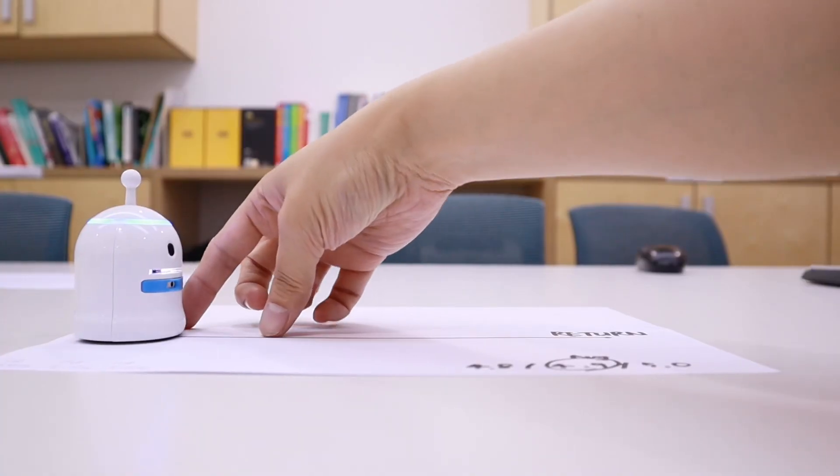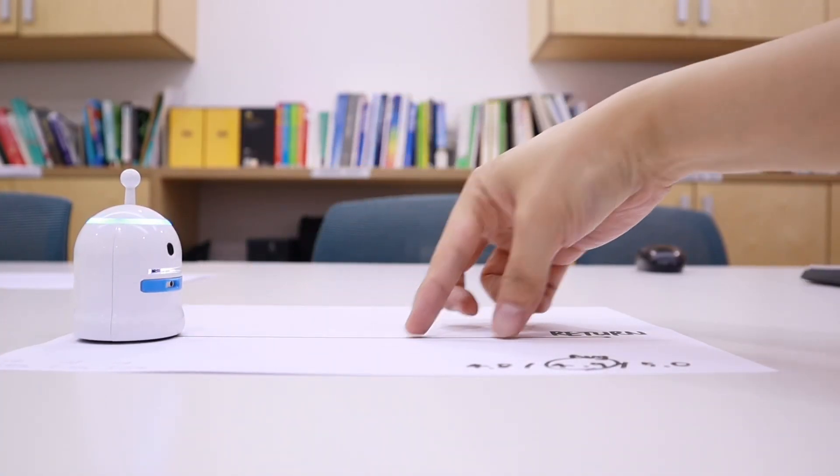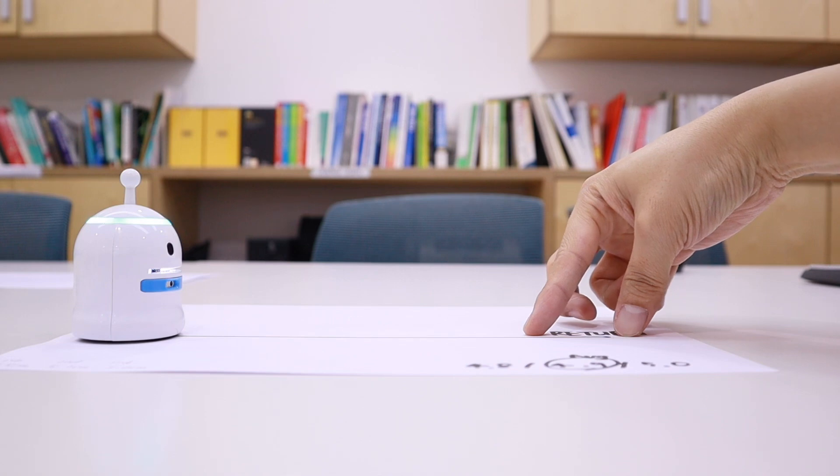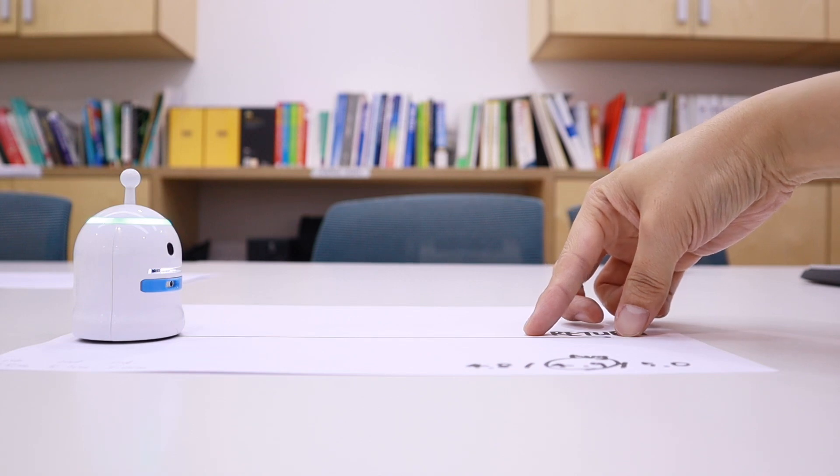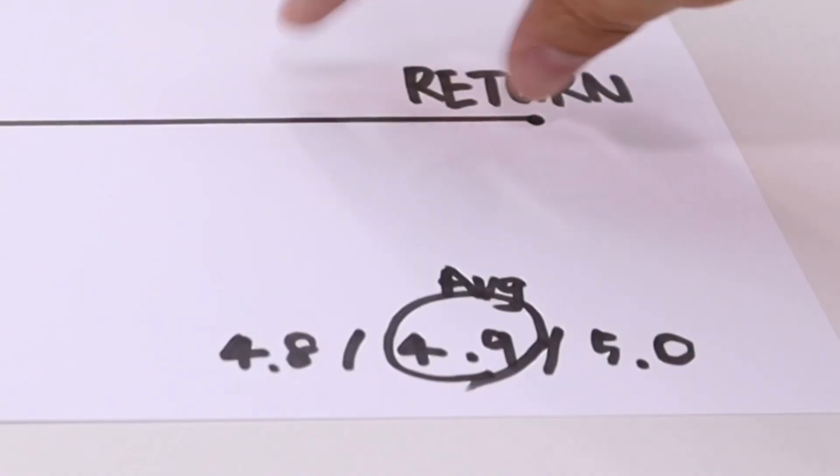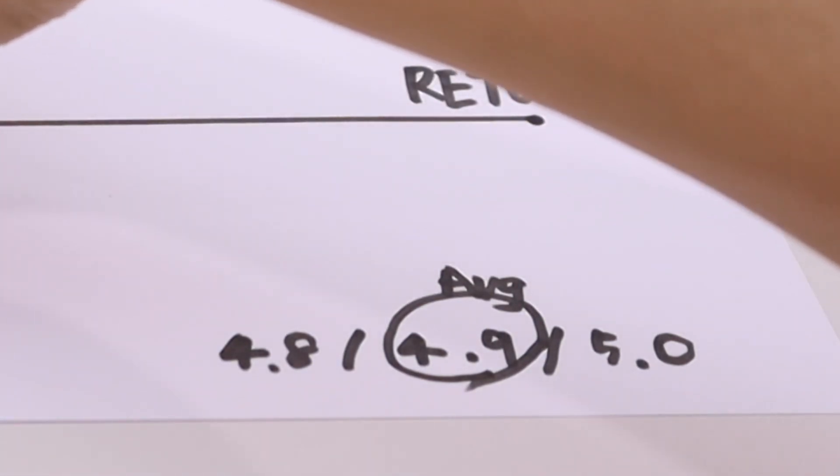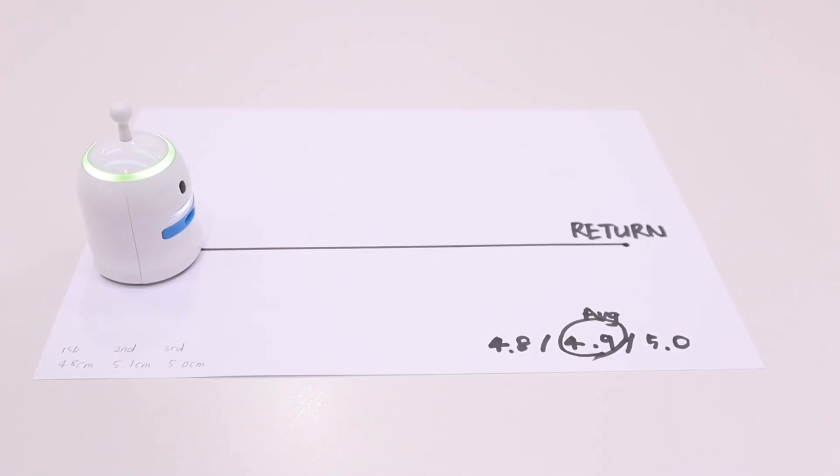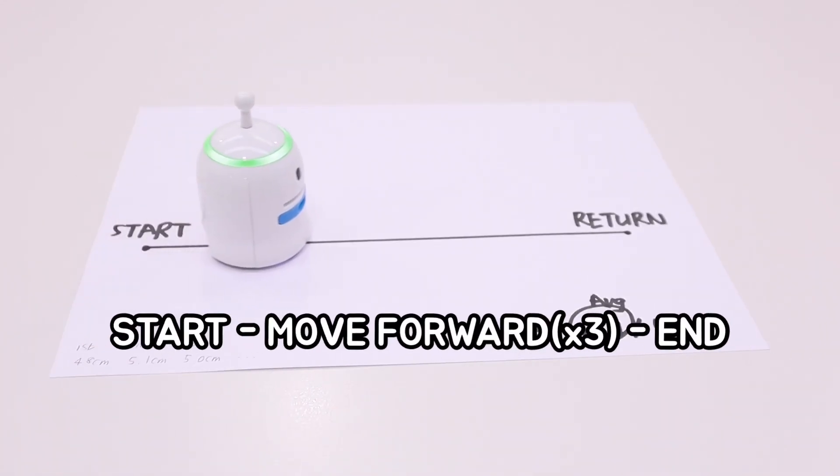Next, we will use this data to design an algorithm that moves to a specific location. Measure the distance from the starting point to a specific location. Then, using the average distance, check how many spaces you need to go to your destination. We can use the algorithm as follows.